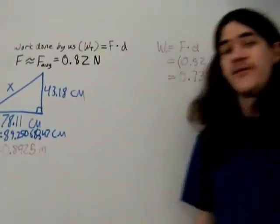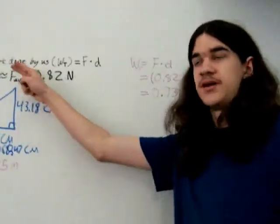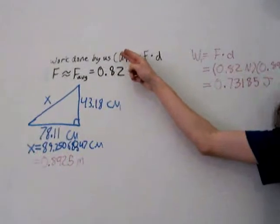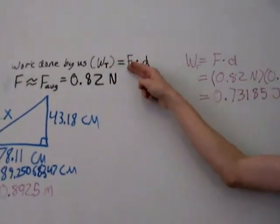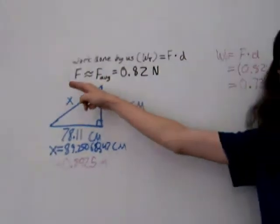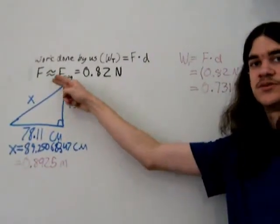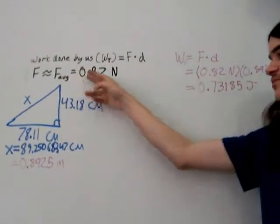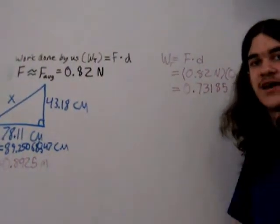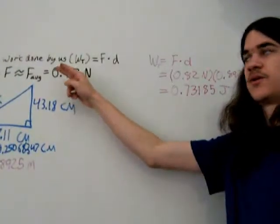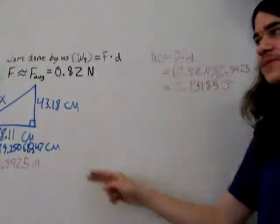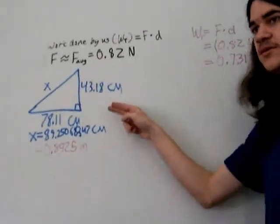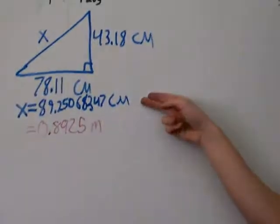Okay, now we are going to solve for the total work done by us, which is the work of tension, because we used a rope, which is equal to the force times the displacement. Now, we're going to say the force is approximately equal to the average force, which we plugged into Logger Pro and found the average force over the interval, which was 0.82 Newtons. And we found the displacement using this triangle, as Daniel showed you, to be 89 centimeters.